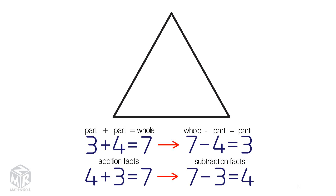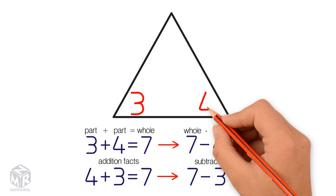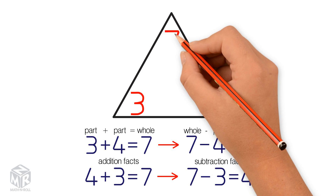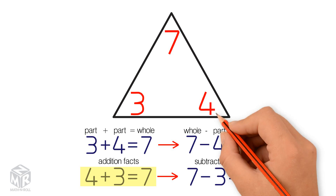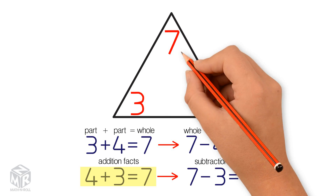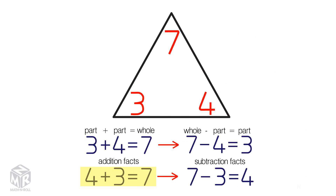We put the small numbers or parts down here. The top number is the sum of the addition fact, or the whole. So the parts are on the bottom and the whole is on the top. For addition, we add the bottom numbers to make the top. 3 plus 4 equals 7. 4 plus 3 equals 7. These are the addition facts.